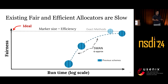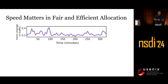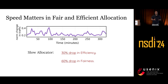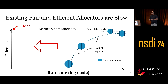You may wonder how much speed matters and whether we can wait for these allocators to finish. We find that a slow allocator can significantly harm the quality of our allocation, because demands can change quite a lot over a short period of time. This figure shows the amount of change in Microsoft's traffic — in some points in time, the change is more than 40 percent from one time step to the next. A slow allocator simply cannot react quickly to these changes, leading to up to 30 percent drop in efficiency and up to 60 percent drop in fairness.